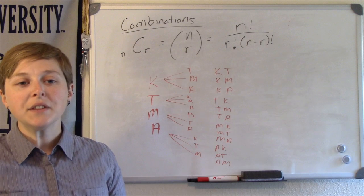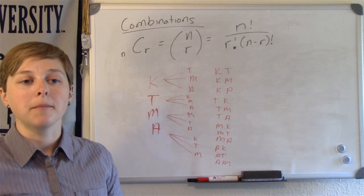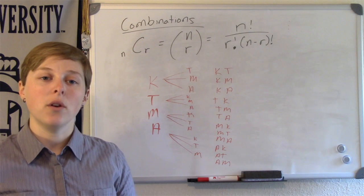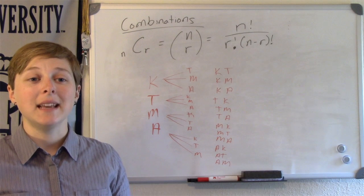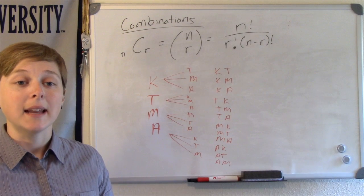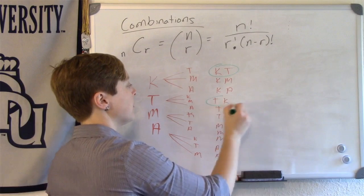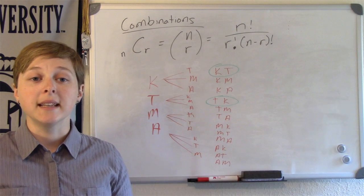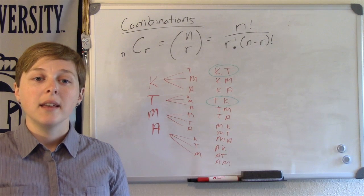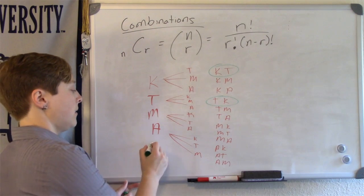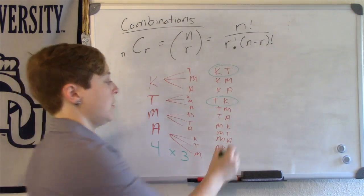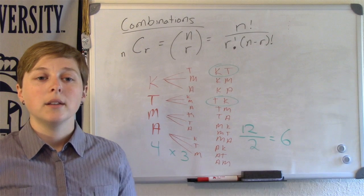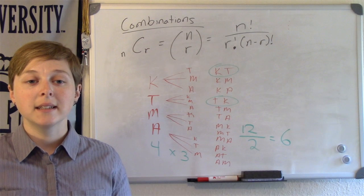The difference between this problem and the previous problem is that it doesn't matter who is selected first and who is selected second. Therefore, Kim and Tina is the same thing as Tina and Kim in my phone favorites. The number of unique possibilities is then split in half — that is, 4 times 3 equals 12, divided by 2 — so we only have 6 different combinations.